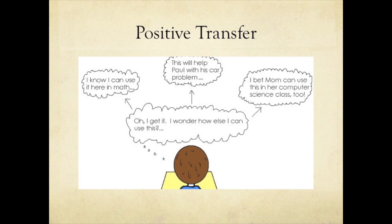Positive transfer is when learning in one situation facilitates learning or performing in another situation. Since understanding and remembering new information is important in positive transfer, meaningful learning and elaboration are two examples that may occur. Meaningful learning is when we transmit new information to the knowledge that is stored in our long-term memory, and we can find meaning in that information.